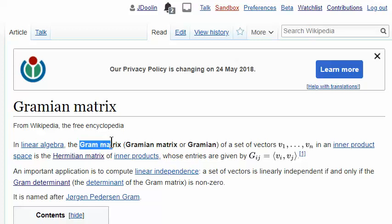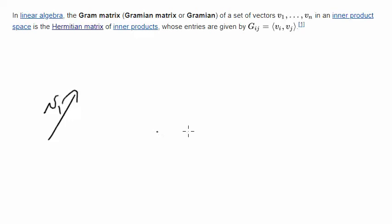Right here it says the Gram matrix. You're given a set of vectors, and you're taking each pair of vectors and calculating a G sub i j. So we've got vector v1, vector v2, vector v3.